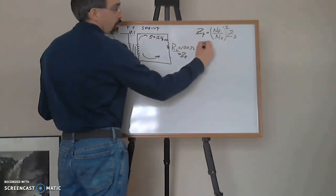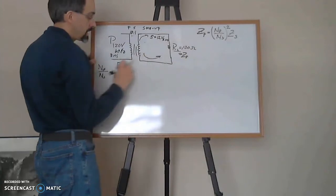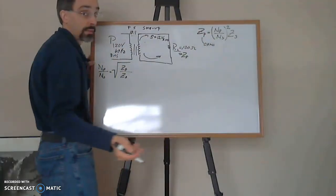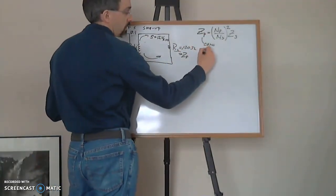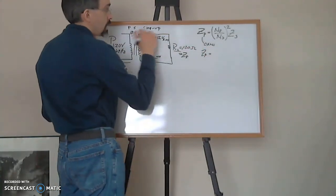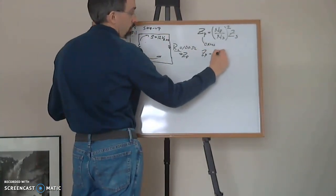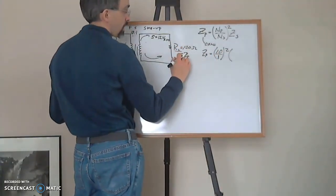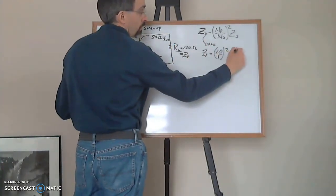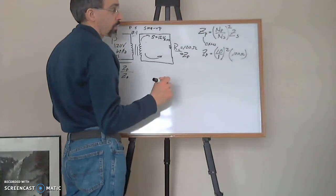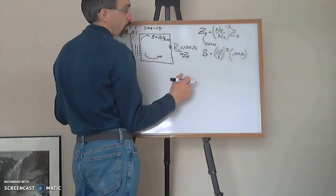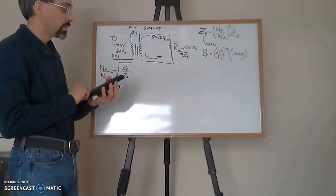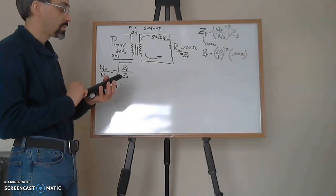If you want to find what the impedance at Zp is, impedance is always in ohms. So in this case, Zp is going to be equal to Np which is 10 over 1, and then we square it times Zs. Well, Zs is equal to your RL which is 100 ohms. So 10 squared is 100, times 100 gives us 10,000 ohms.